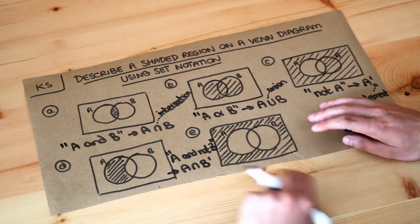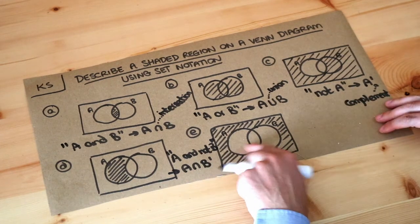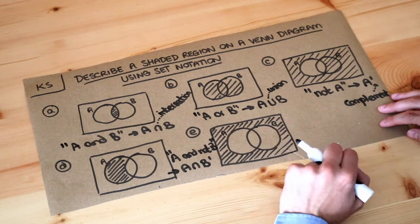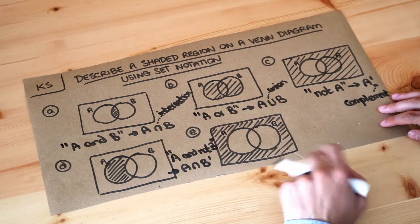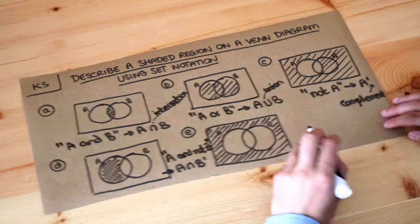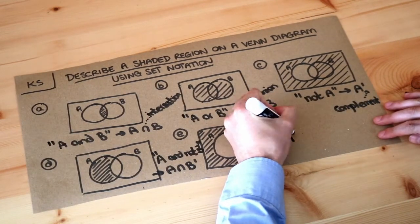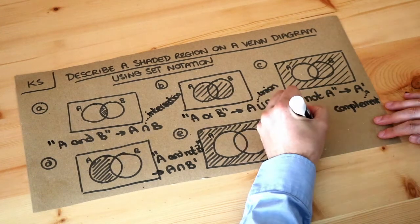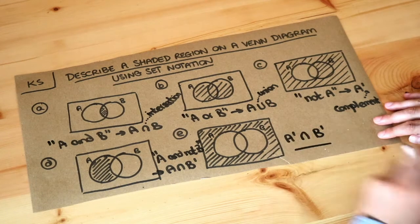And the last one here in E - we want everything that's not in A nor in B, so it's not allowed to be in A and it's not allowed to be in B. We get the region outside, so it's A prime intersection B prime.